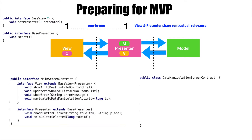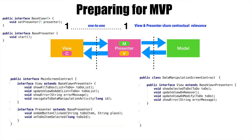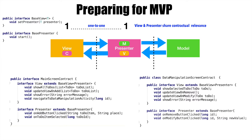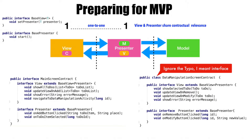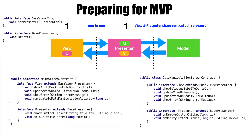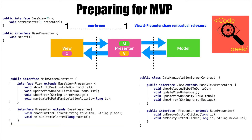Since there is a one-to-one mapping between view and presenter and there is an obligation on the developer implementing a particular screen to implement both view and presenter as part of the whole contract, it is best represented by defining the view and presenter as part of the interface for a particular screen. We can follow the same mechanism for the data manipulation screen contract as well. And this interface once again defines two more interfaces — a view that extends base view and a presenter handling the remove and modify actions. So, let's have a look at the actual code.